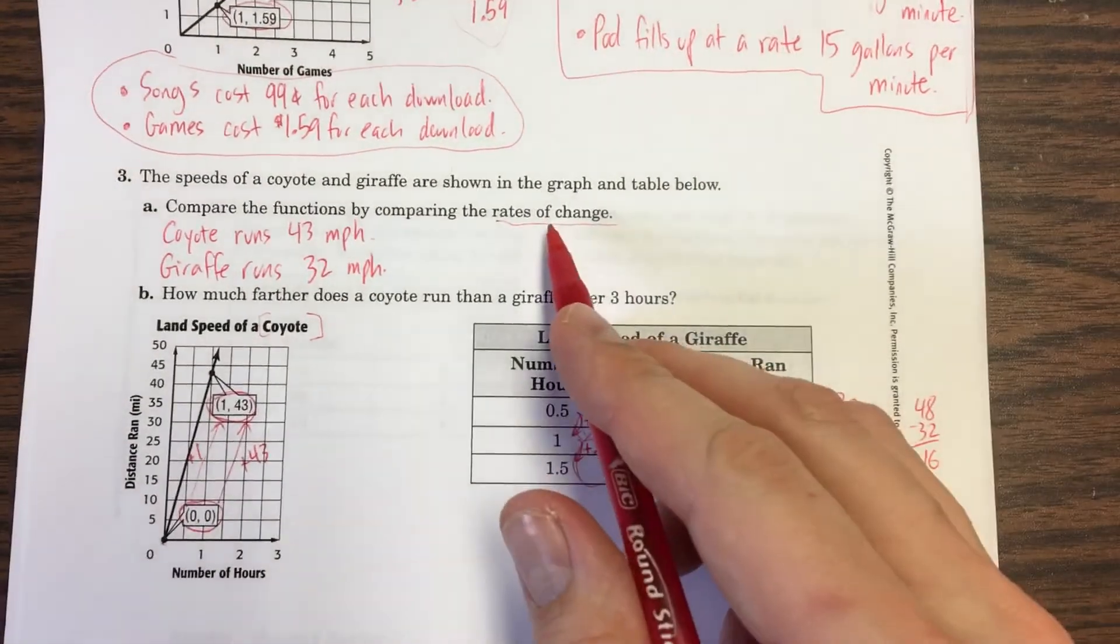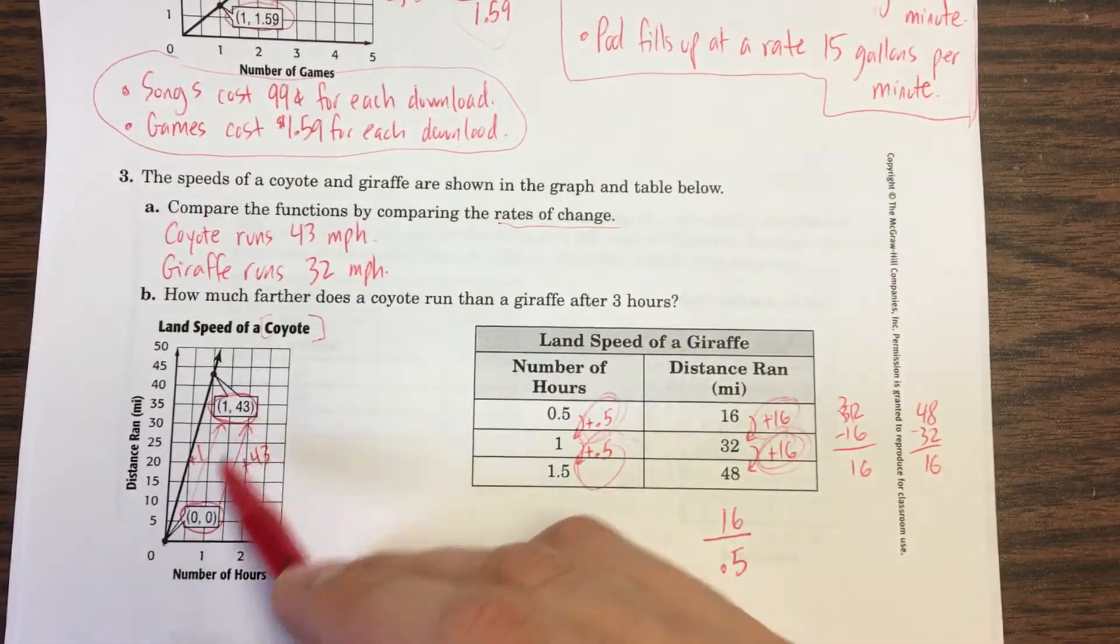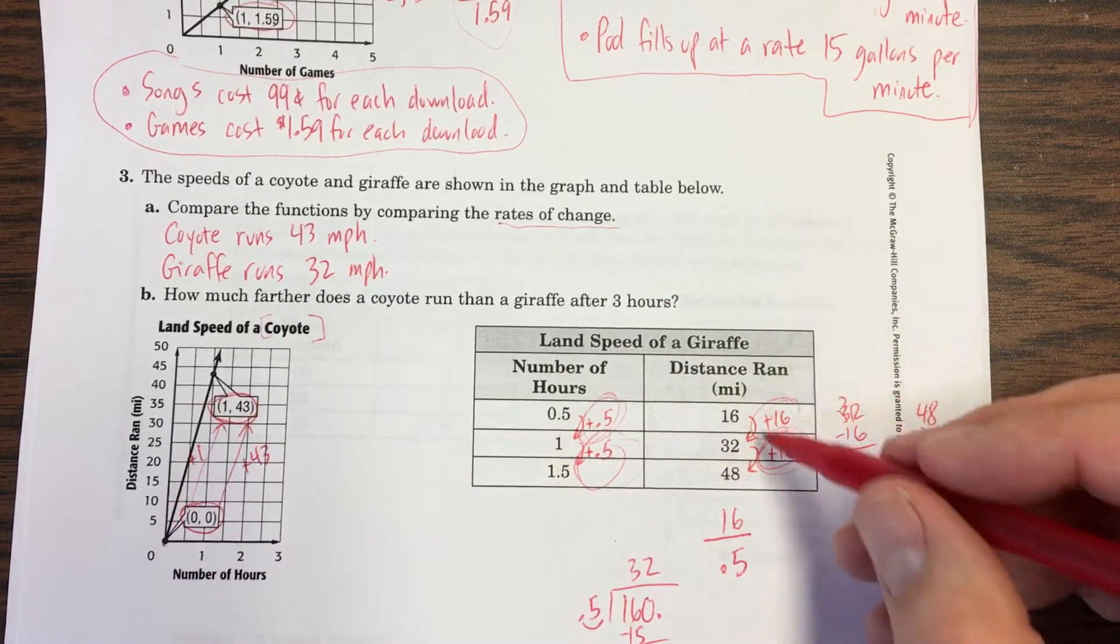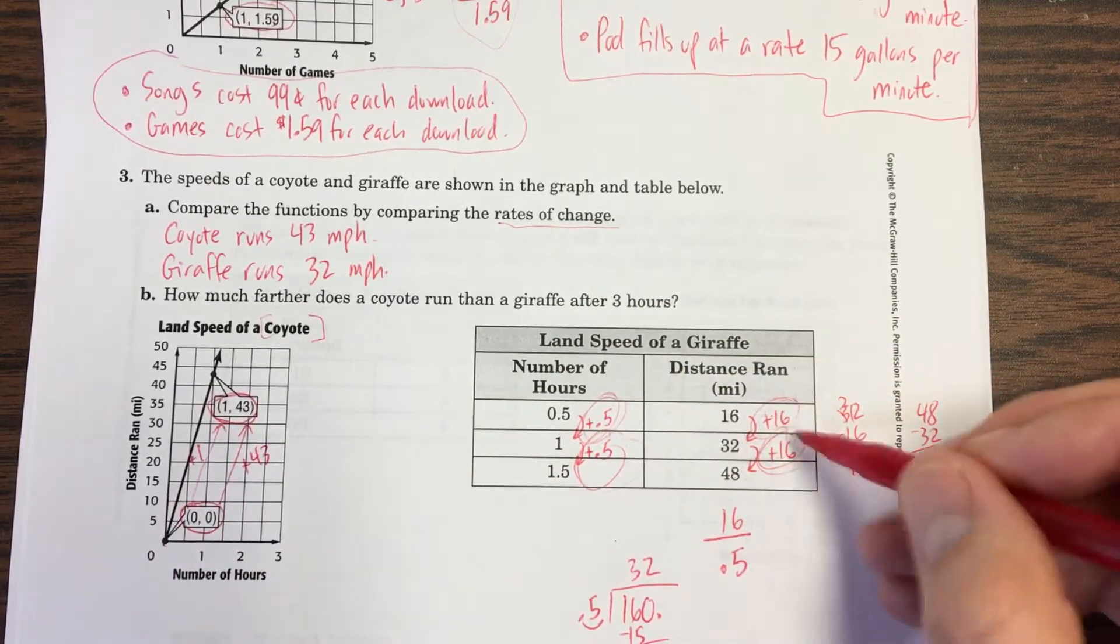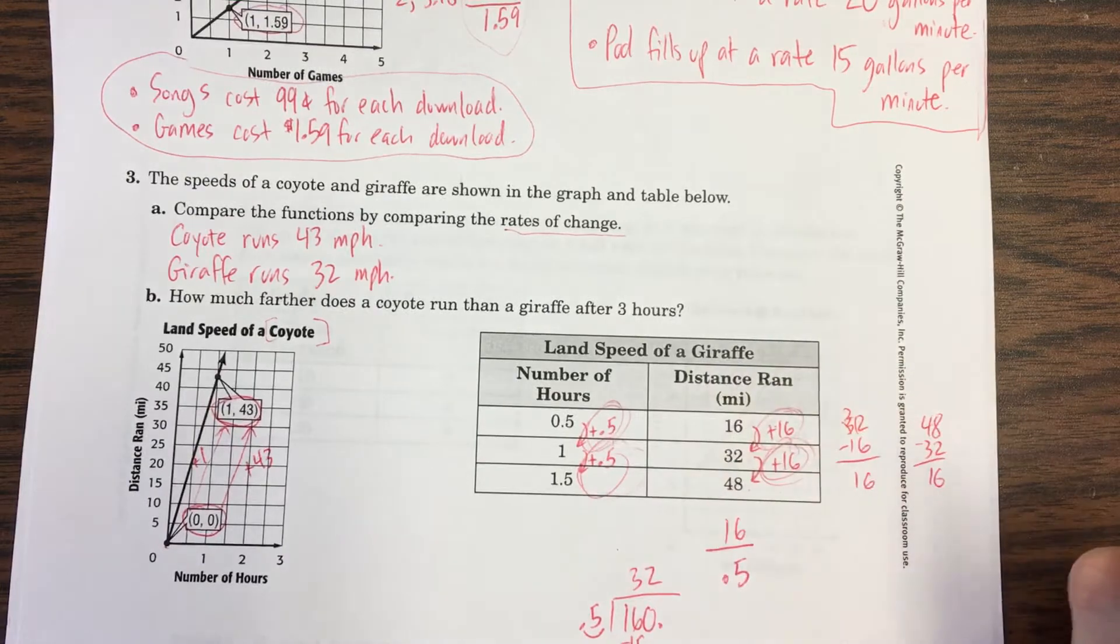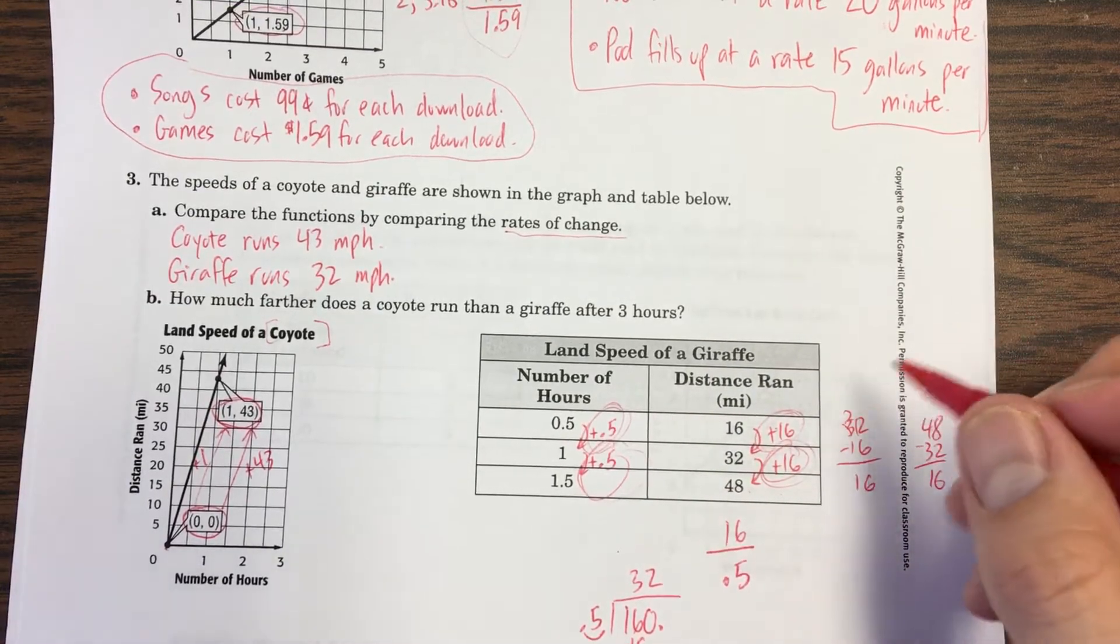Those are the rates of change. When we compared how much this changed to how much this changed, how much this quantity, the dependent variable changed, to how much this quantity changed, the independent variable. Oh, question B.